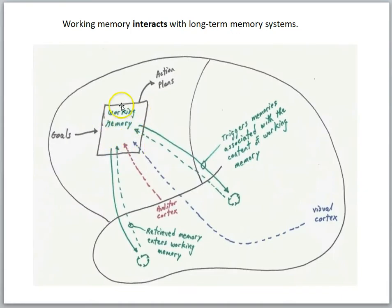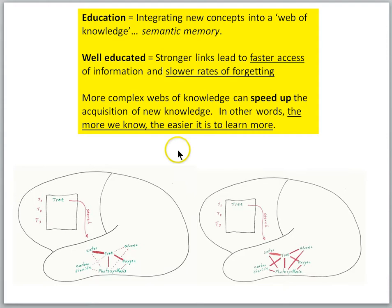In previous lessons, we learned about the working memory system — our short-term, limited capacity system. This system allows the brain to manipulate information and share information to other brain regions. It also has access to the long-term memory system so that it can search for related and relevant information to adaptively guide our behavior. We also learned about the semantic memory system, and getting an education was integrating new concepts into this web of knowledge. The well-educated person has strong links between items in semantic memory, leading to faster access and slower rates of forgetting.